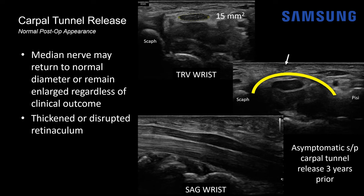Another finding we might see with carpal tunnel release is that the retinaculum might be thickened or disrupted. Looking at the flexor retinaculum here, you can see it's ill-defined and irregular due to the carpal tunnel release — that's a normal post-operative appearance. You might also see volar displacement of the nerve after surgery, which is also considered normal.